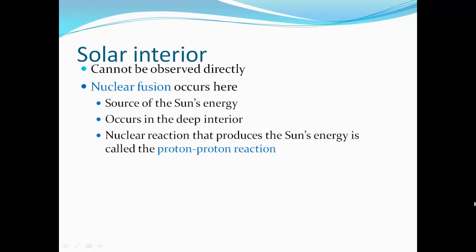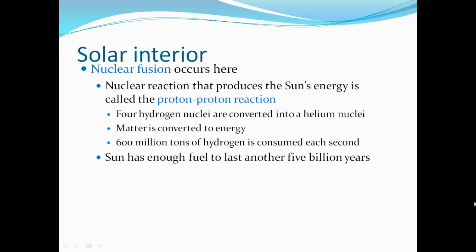The solar interior we cannot observe directly. Nuclear fusion occurs here. The source of the sun's energy occurs in the deep interior. The nuclear reaction that produces the sun's energy is called a proton-proton reaction. Four hydrogen nuclei are converted into a helium nucleus. Matter is converted to energy. 600 million tons of hydrogen fuse each second. This leaves enough fuel to last another five billion years.